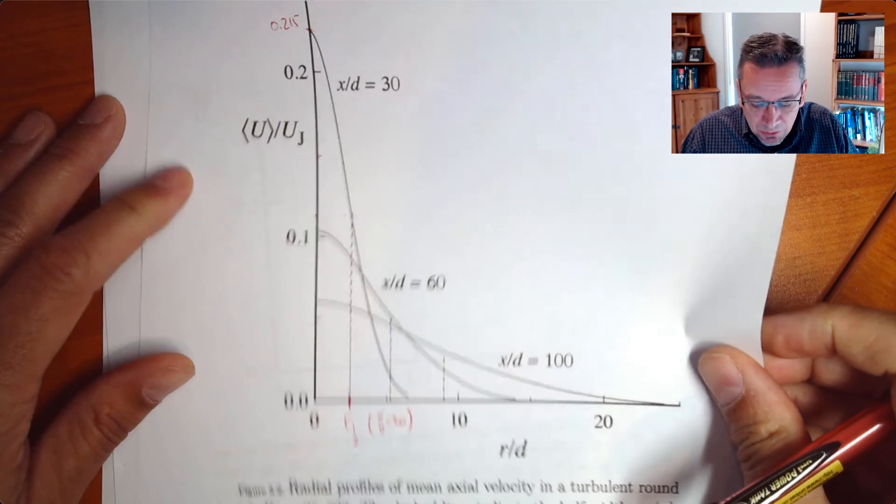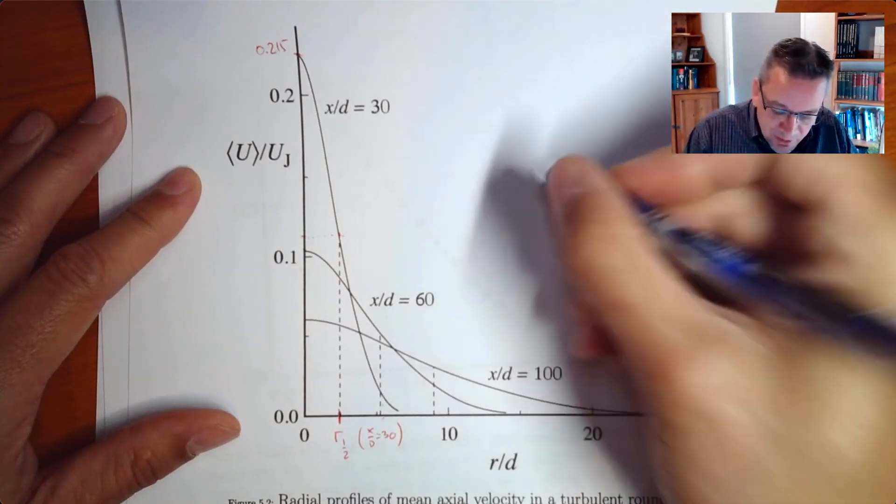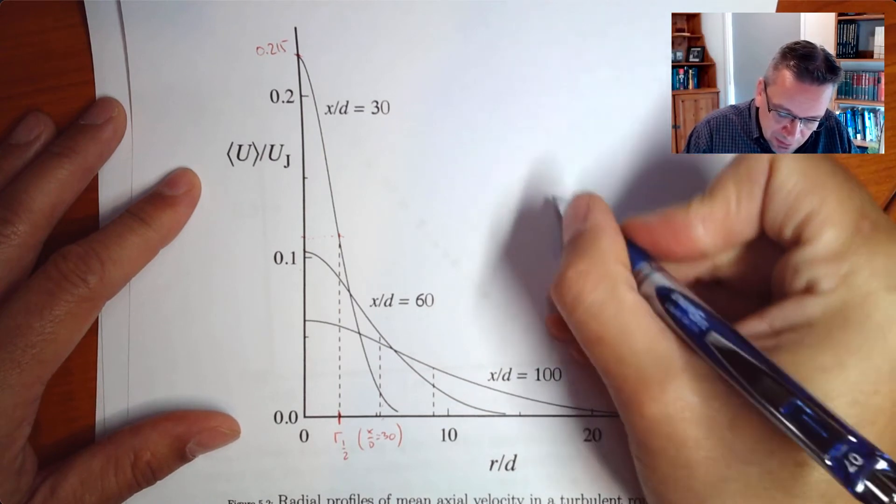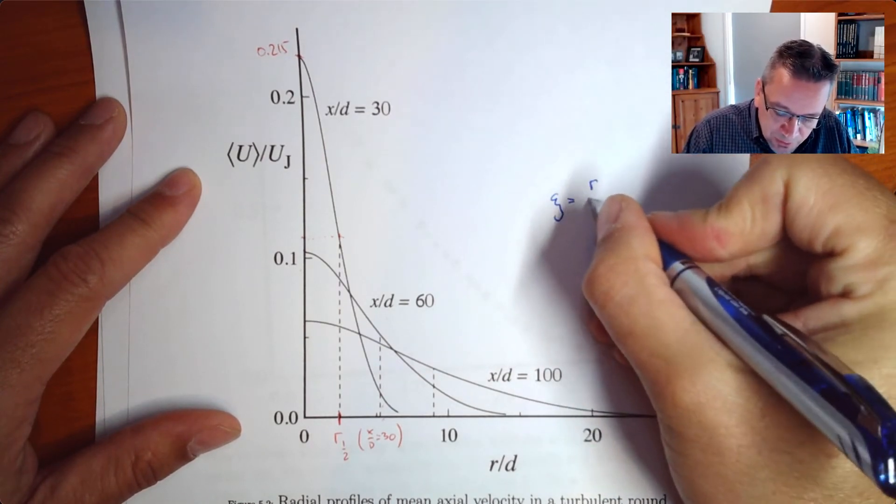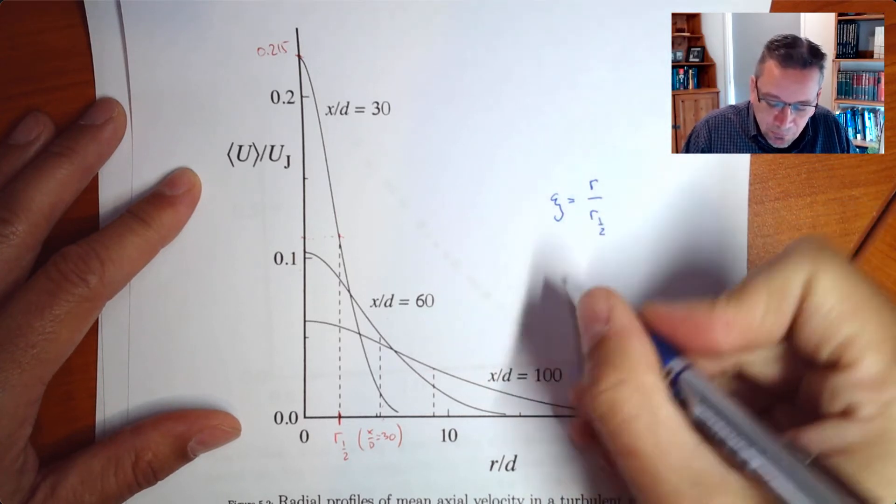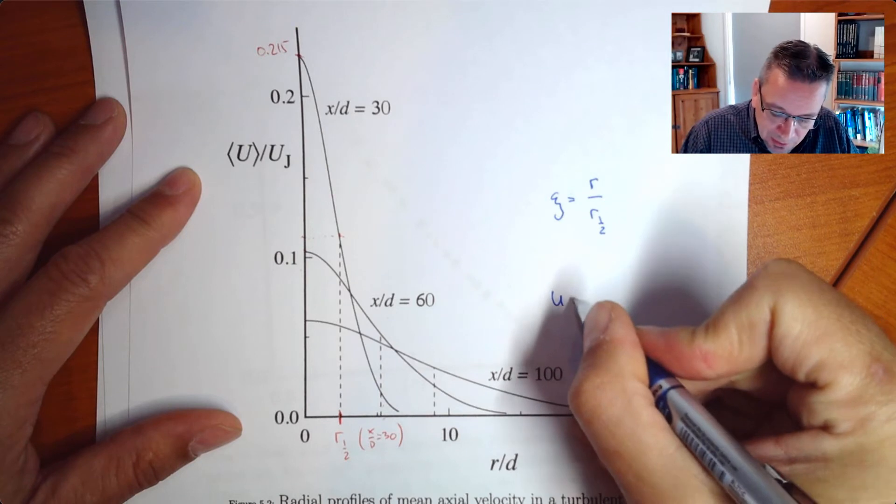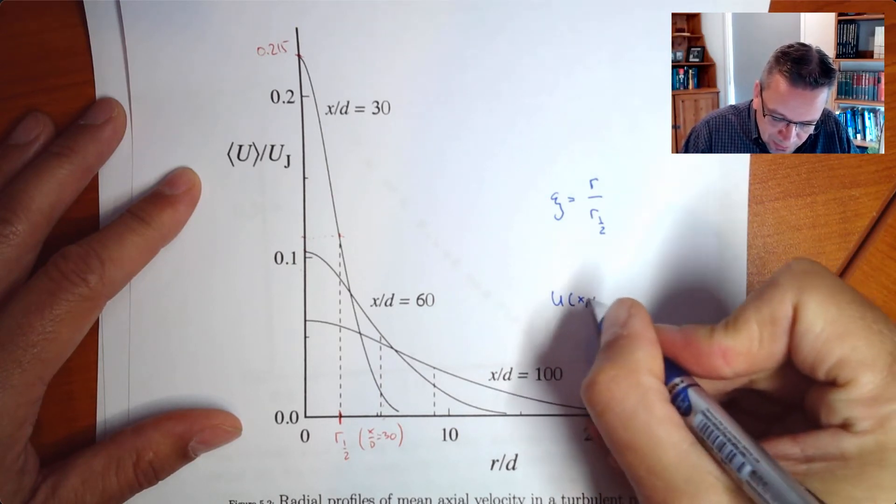So if you're now using that, you're saying now that your characteristic length scale, so xi is going to be then your radius over the radius of the half width and your velocity, which is a function of x and r, is going to be then the velocity over...